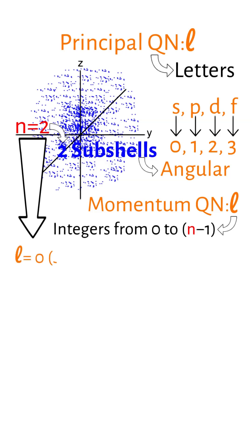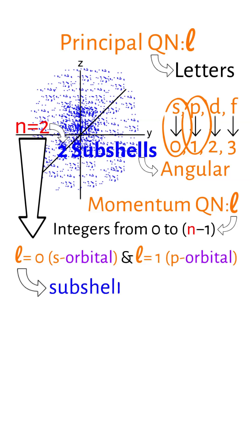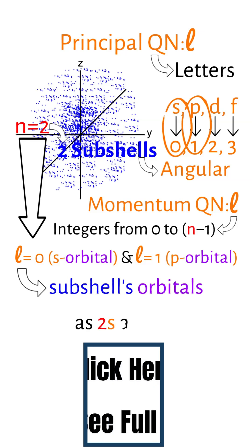Thus, for N equals 2, we have L equals 0, the S orbital, and L equals 1, the P orbital, leading to the designation of the subshells' orbitals as 2s and 2p, respectively.